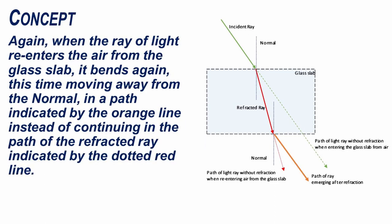When the ray of light re-enters the air from the glass slab, it bends again, this time moving away from the normal in a path indicated by the orange line instead of continuing in the path of the refracted ray indicated by the dotted red line.